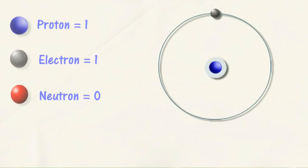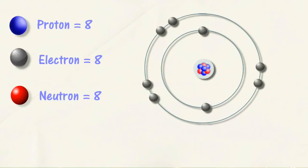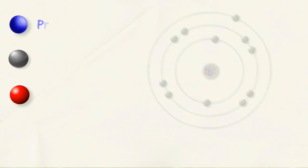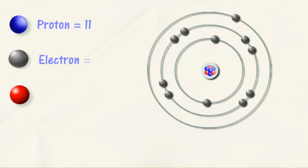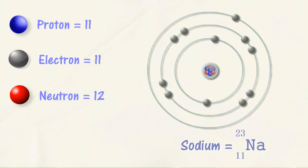For example, if the atom has one proton and one electron, it forms an atom of hydrogen. If the number of protons, electrons, and neutrons are 8 each, then we have an atom of oxygen. If 11 protons, 11 electrons, and 12 neutrons are present in one atom, it's called sodium.